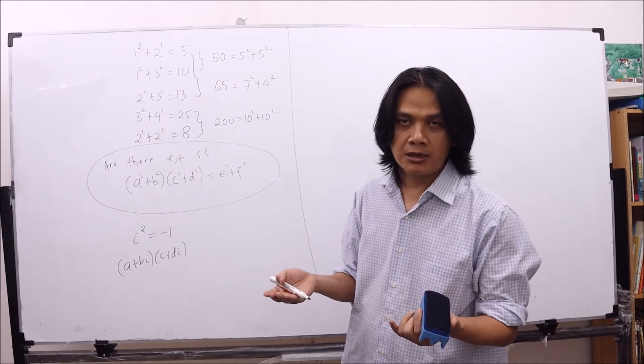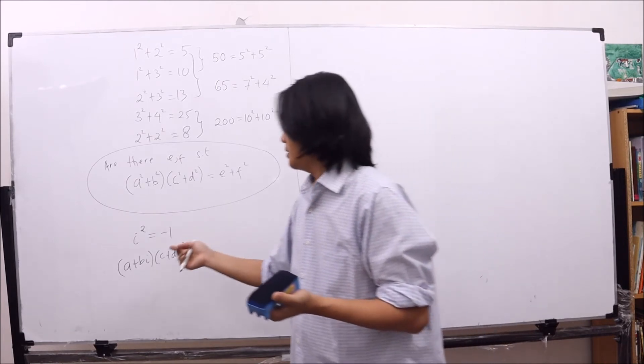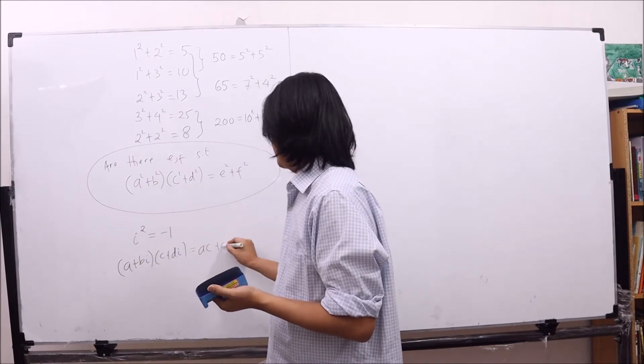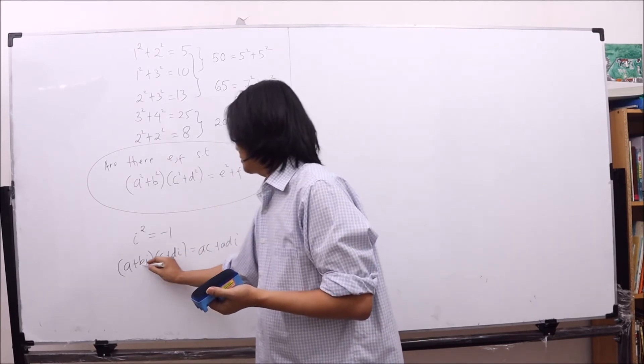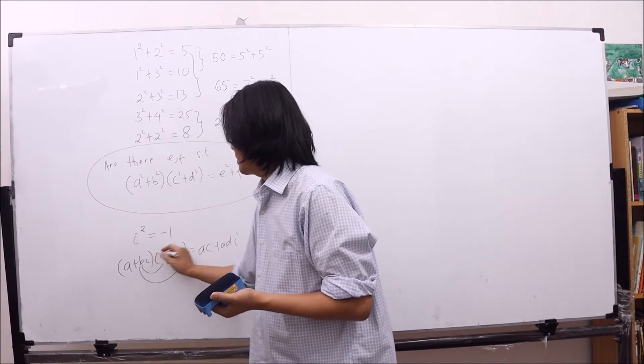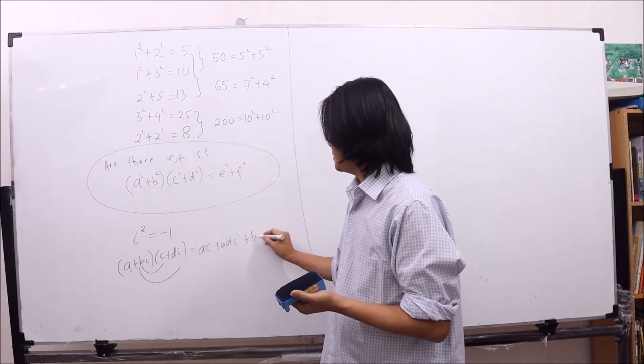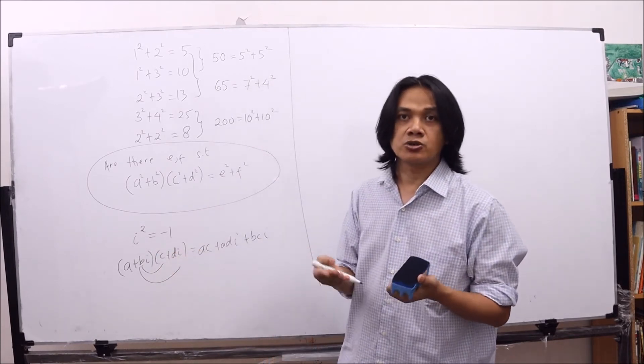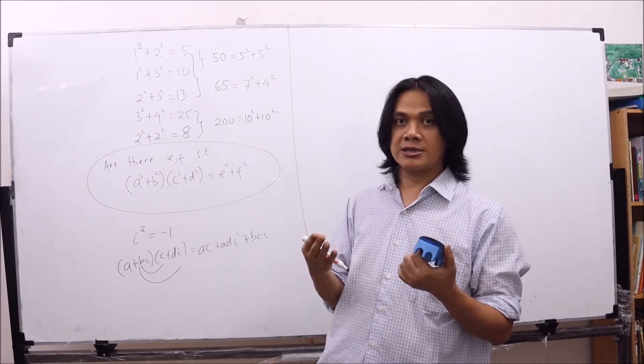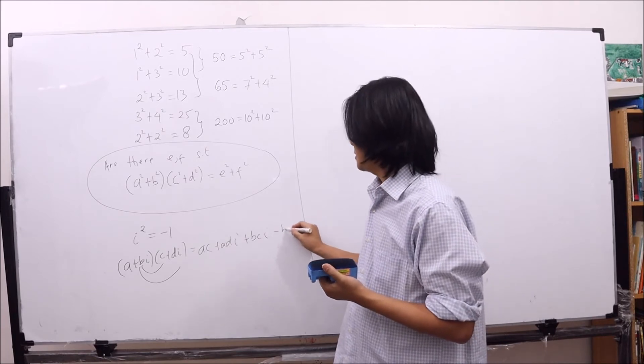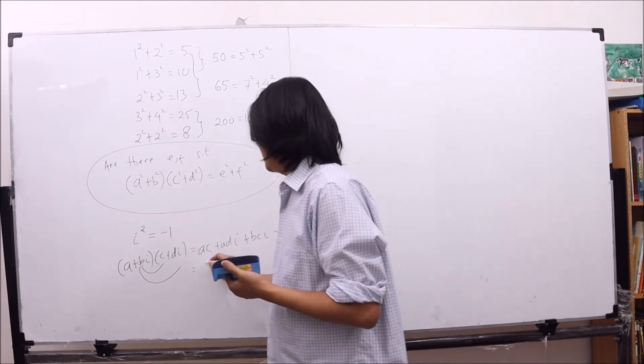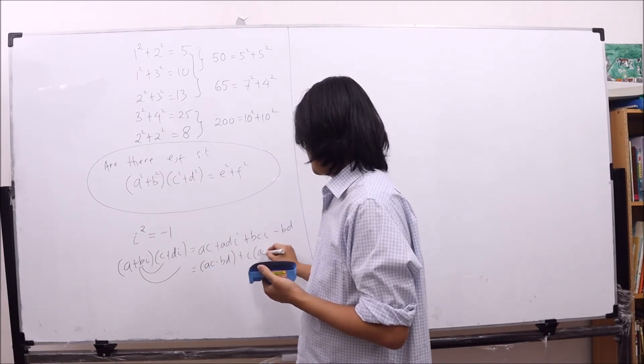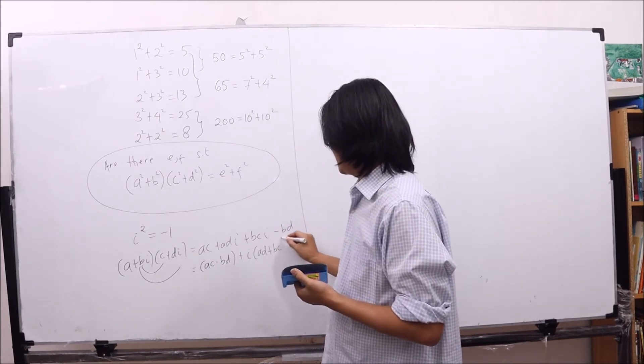If we multiply, we just do as usual. Just use some distributive property. a times c, and then a times d i, and then we multiply b i and c, becomes b c i, and then b i times d i, b d i squared, but i squared is negative one. So this is minus b d.